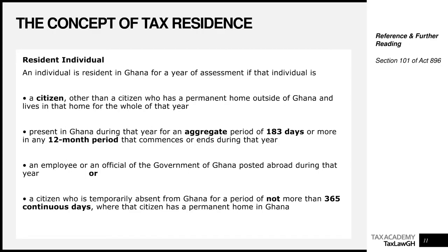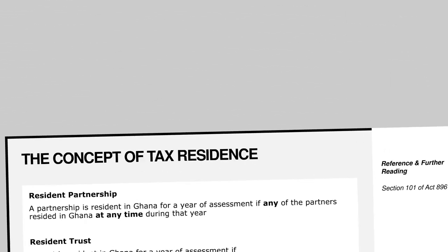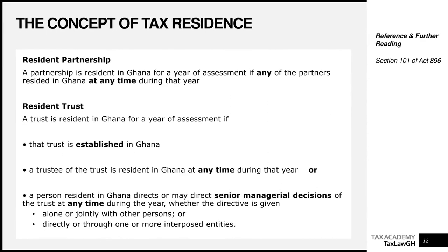Those are the rules for making an individual resident in Ghana. For partnerships — remember, a partnership is an association of two or more people who come together to do business, sharing profits and losses according to their profit and loss sharing ratio — a partnership is resident in Ghana if any partner of the partnership resided in Ghana at any time during the year. So if you have 15 partners and 14 are in Germany but just one is in Ghana, the whole partnership is deemed tax resident in Ghana.